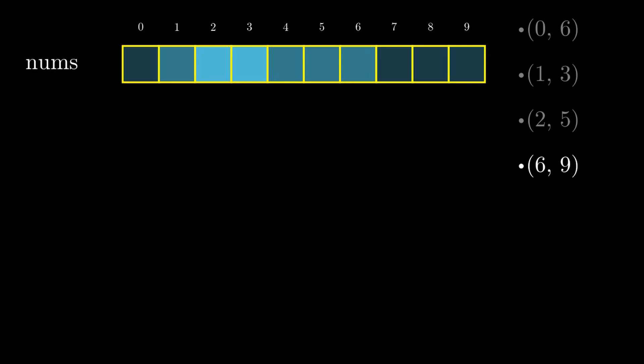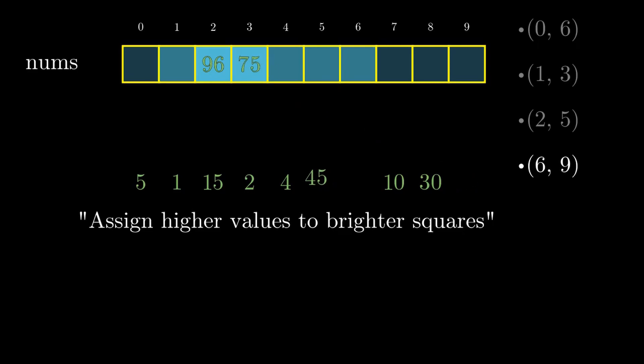It would make sense to put the highest value of nums in the brightest square, the second highest in the second brightest square, and so on, up to the smallest value in the darkest square.